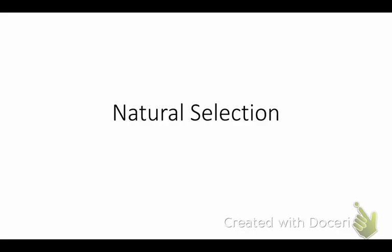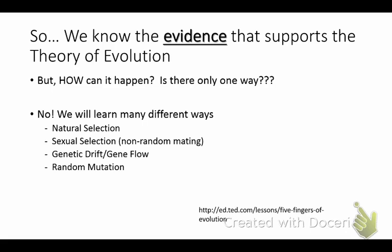Okay, so today natural selection is going to be our topic. What you just took your quiz over was from last week's lecture notes, the pre-lab activity, and two days of lab activities — four days reviewing the exact same topic. So we know evidence that supports the theory of evolution. What were our different lines of support? Can somebody give me an example of one of the five types of evidence for evolution?